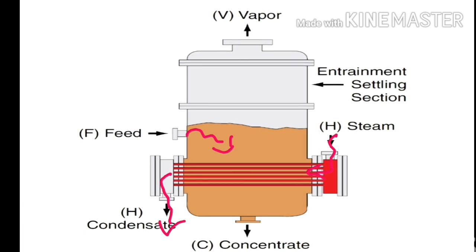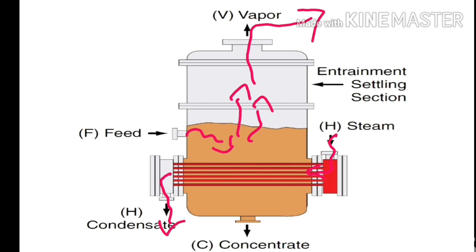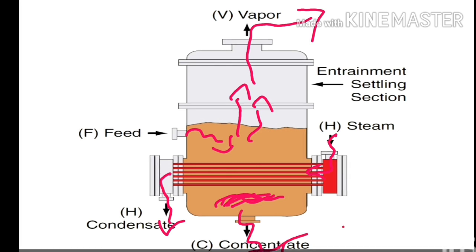The liquid present inside the evaporator absorbs heat from the steam and undergoes vaporization. This vapor passes through the vapor outlet, and this process continues until a concentrated thick residue remains in the evaporator. That residue can be collected through the concentrated product outlet. This is the working principle of the horizontal tube evaporator.